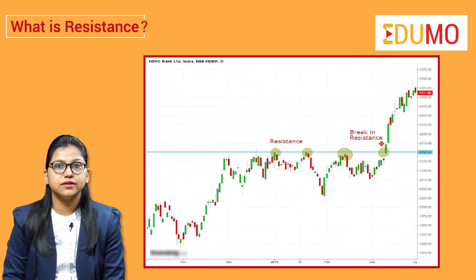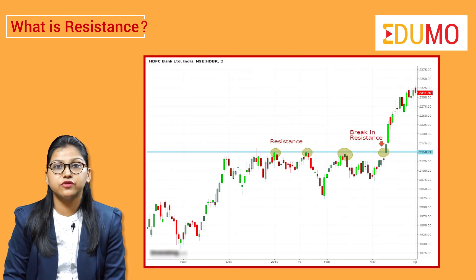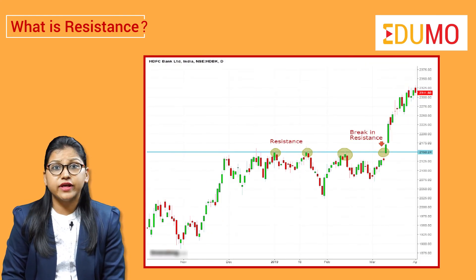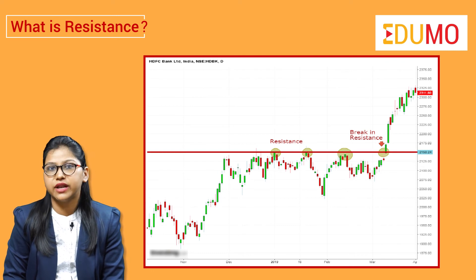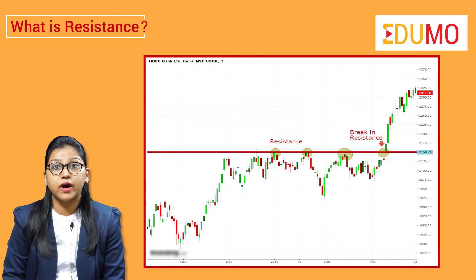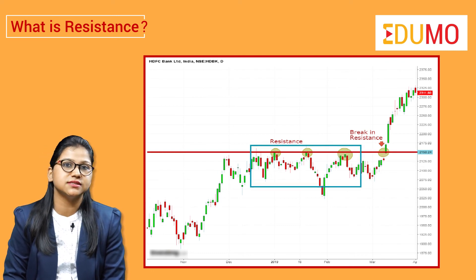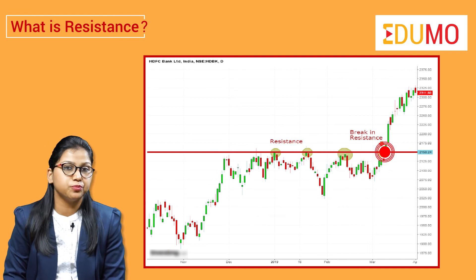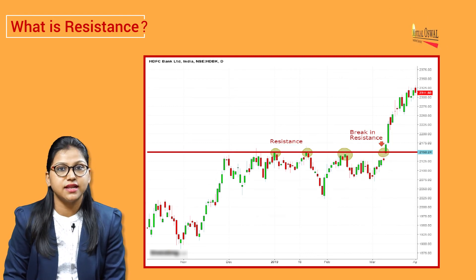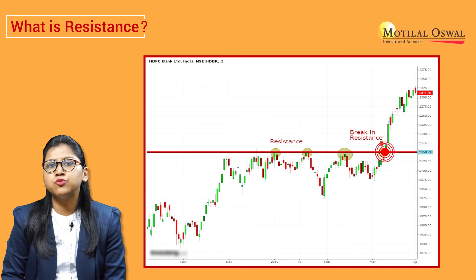Here you can see from the daily chart of HDFC Bank that when the prices have come to the 2150 level, they are not able to move above this resistance level. Finally, at the last point, the bulls are able to break the resistance level and move the price upwards.